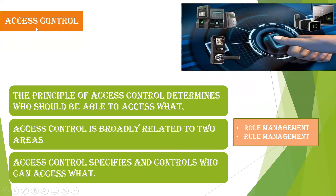Next is access control. Access control determines which user can enter a particular space or network. For example, to enter an HOD's cabin you might need a fingerprint, or to enter a confidential area you need face recognition or fingerprint recognition. Access control specifies which user has to access which network or message — it is not open to all users. Just like a bank server only shows your homepage after you enter your username and password.